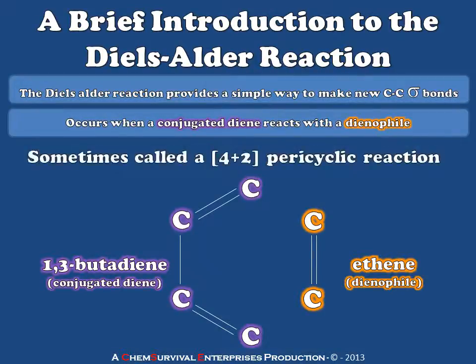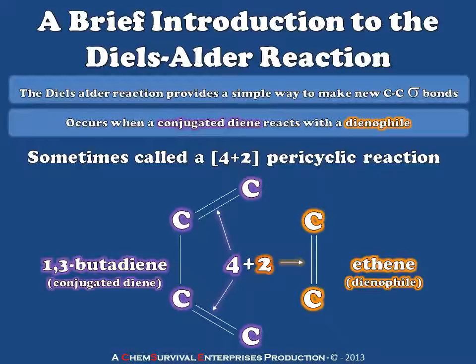When this happens, we get a situation called a 4 plus 2 pericyclic reaction. The 4 and the 2 refer to the number of pi electrons that each system brings to the party. The conjugated diene brings 4 electrons while the dienophile brings 2. This is very important, and the 4 plus 2 is a very special reaction.